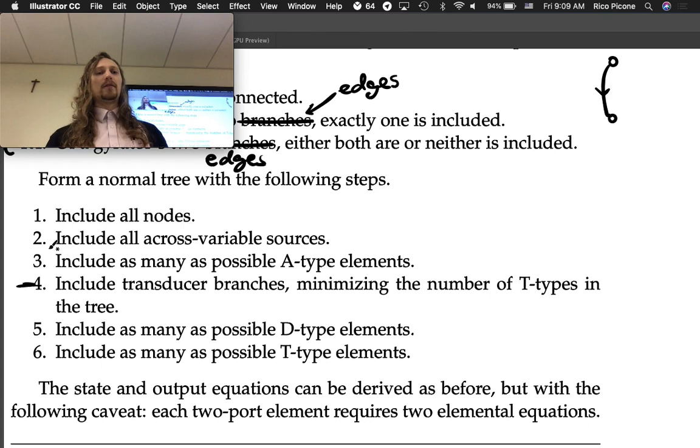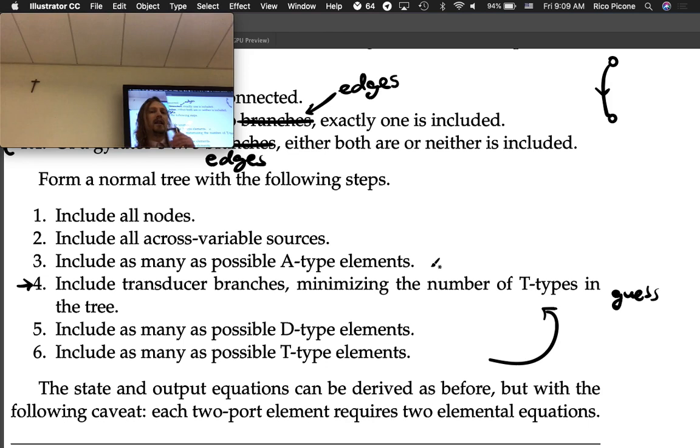Then we go back to our regular steps. This interpolated one is four. Four is a little bit new, and then the rest of them are the same: D-type and T-type. You might have to go through this guess the first time and then loop back up there and maybe try something different to see if you can minimize the number of T-types. It's an iterative process in general. Sometimes you can do this by inspection, but what you're really doing is firing off the rest of the rules and then looping back and thinking it through.